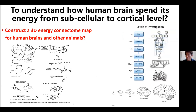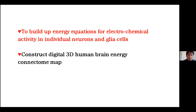In order to understand how the human brain spends its energy efficiently from subcellular level to the cortical level, we did a lot of computational modeling. The final goal is to construct a three-dimensional energy connectome map for human brains and also for other animals. Currently for this project, we have already finished the human brain energy connectome map; for other animals, we are still on the way. We present the topic from two sections. The first is to build up the energy equations for electrical, electronic, and chemical activities in individual neurons and glial cells. The second is to construct the human brain energy map.